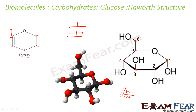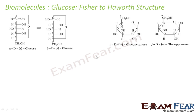The glucose Haworth structure is also called the pyranose structure. You can visualize the conversion by imagining placing a nail and pulling the chain — whatever groups are on the left-hand side of the Fischer formula come to the top, and whatever is on the right-hand side comes to the bottom.